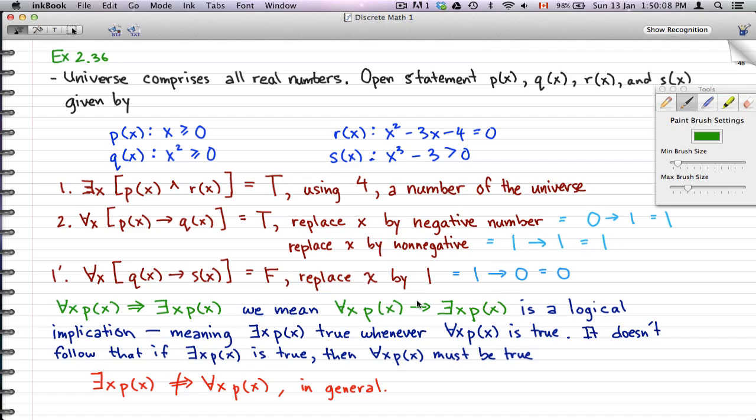That is a logical implication meaning that exists x Px is true whenever for all x Px is true. But what I want to emphasize here is that it doesn't follow that if exists x Px is true, then for all x Px must be true. So what I want to emphasize here is that for all x Px logically implies exists x Px, but it doesn't go the other way around. Exists x Px does not logically imply for all x Px in general.